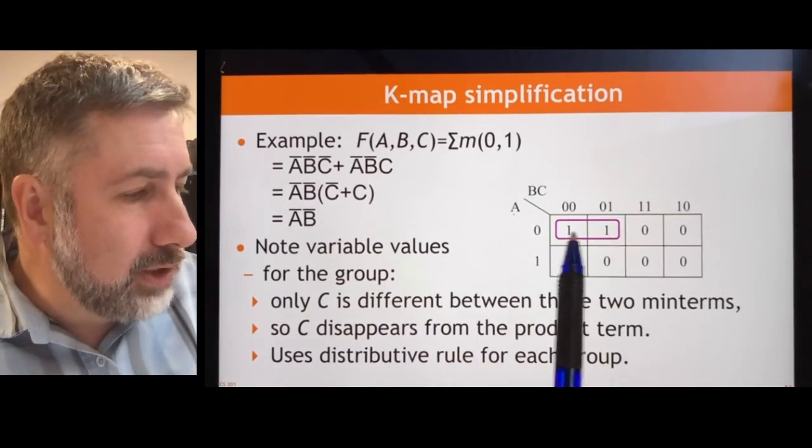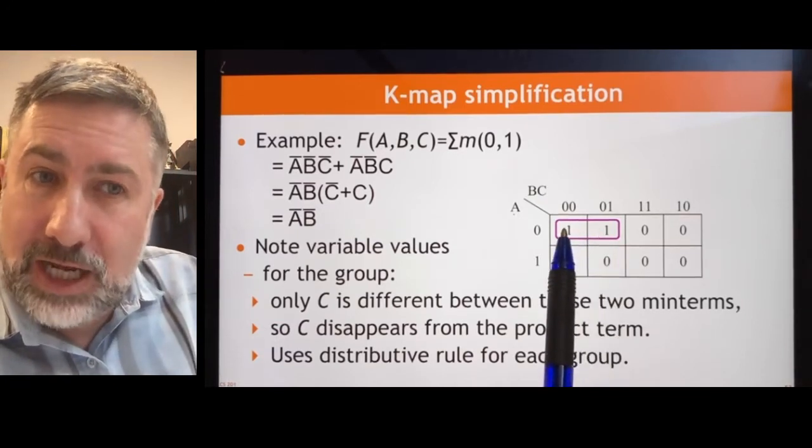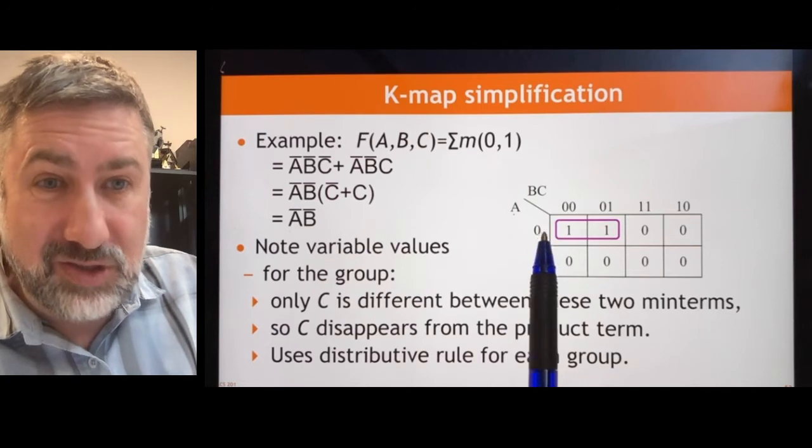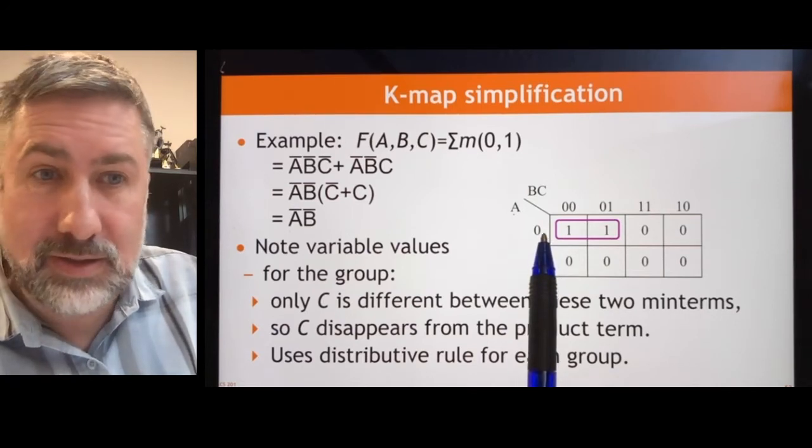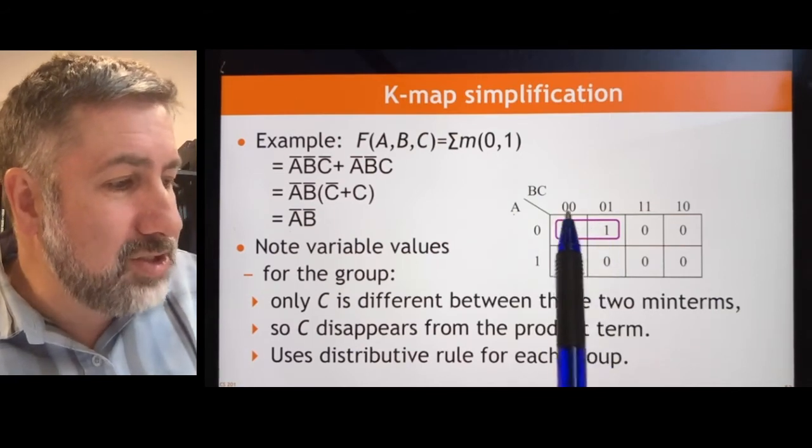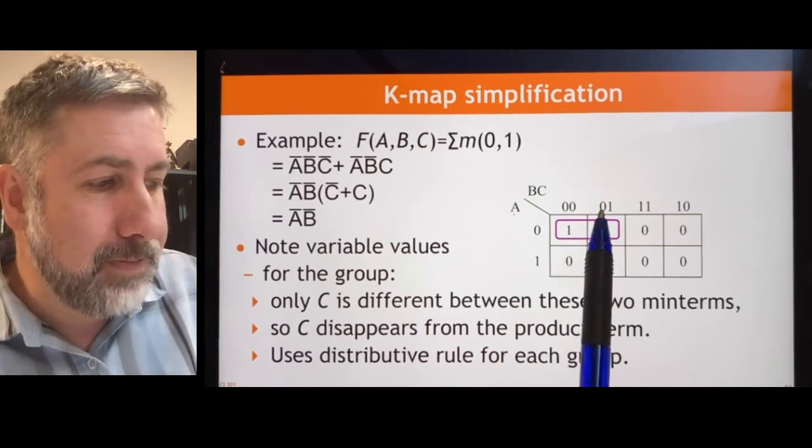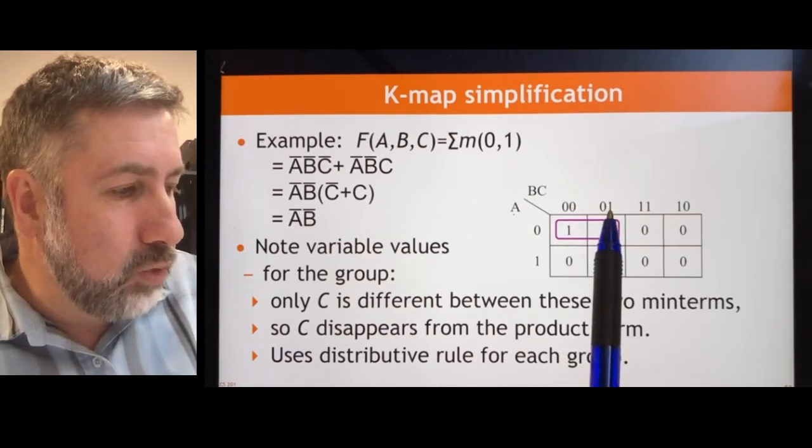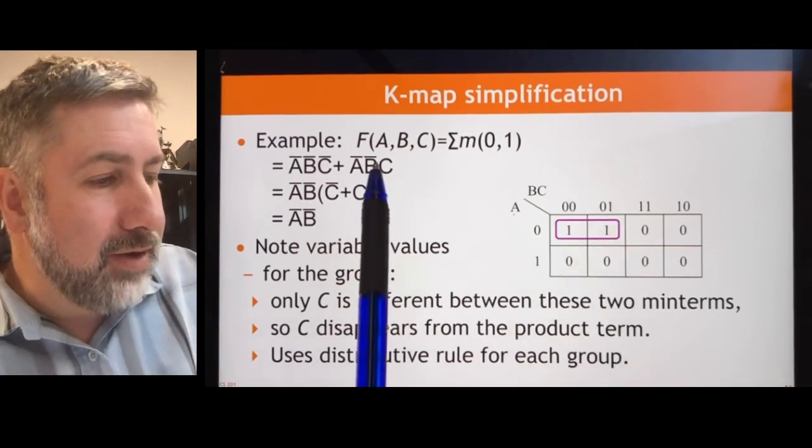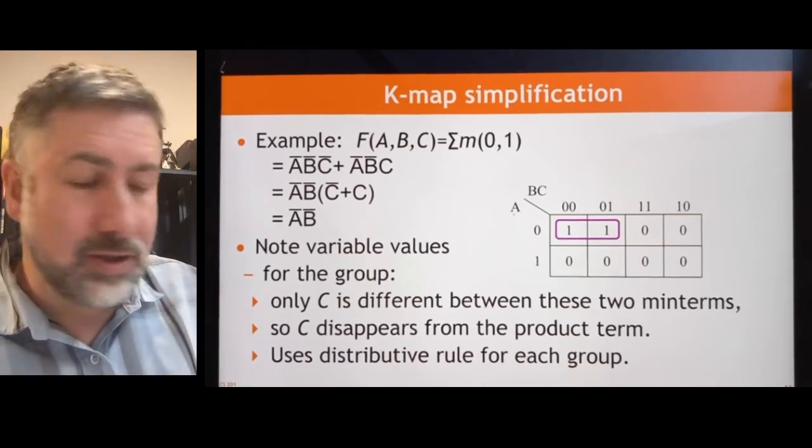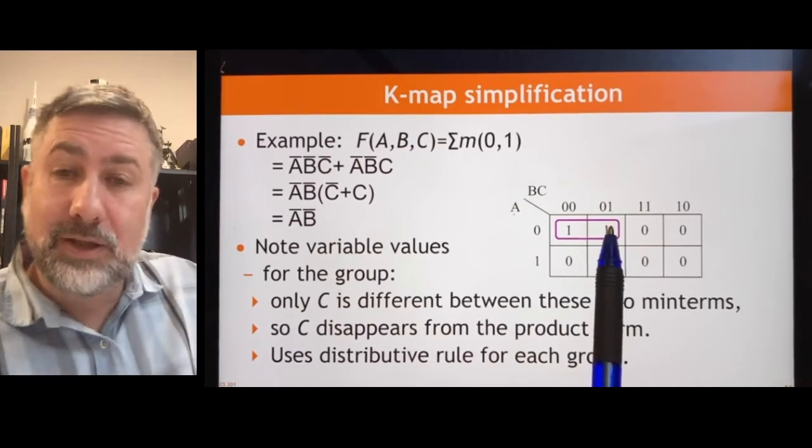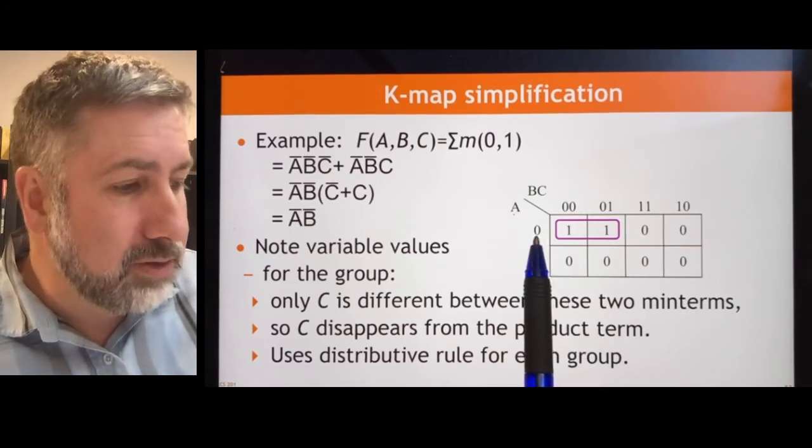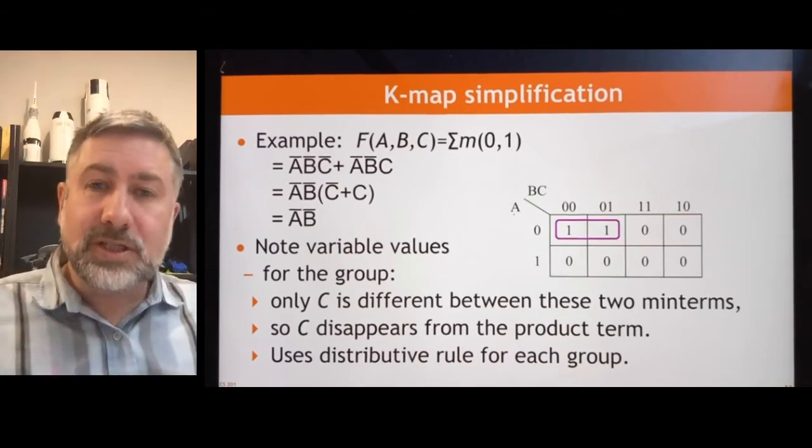How do you read that off of this chart? Well, what you do is you look at the chart and you say to yourself, which variable changes within this group? For every term in this group, A is 0. That means we know that A prime, the 0 version of A, has to be in the term that this group represents. For every 1 in this term, B is 0, which means B prime has to be in the term. But for the C variable, for this member of the group, the C is 0. And for this member of the group, the C is 1. And we know that if the C is 0 here and the C is 1 there, then by this logic, the C will go away and it isn't present in the term. So that's the process you use. Look at a pair of terms in the group and say to yourself, well, C changes. If C changes, it's not in the group. And so A is the same, which means A is in the group. And B is the same, which means B is in the group. So this is the process of Karnaugh Map simplification.